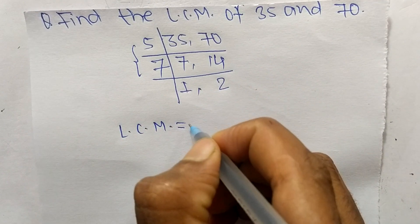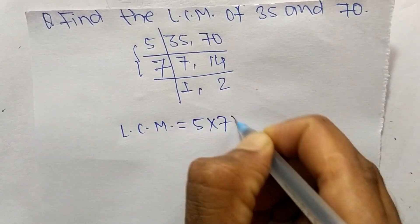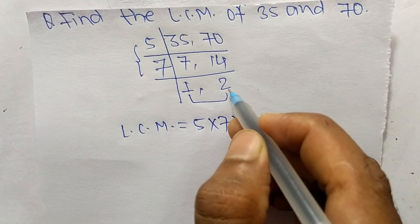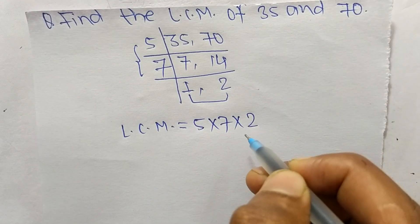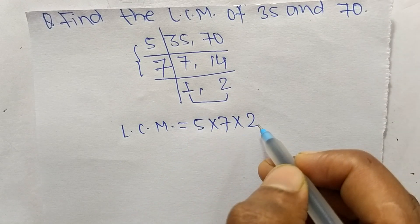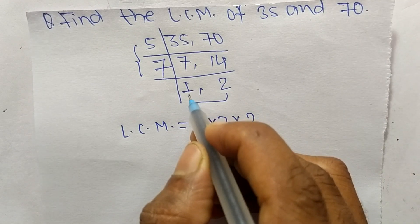From this part we have 5 and 7, and from this part we have 1 and 2, but we take here only 2 and we neglect 1 because by multiplying any number with 1 we get the same result.